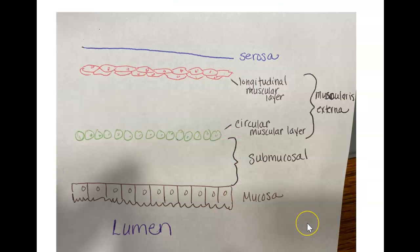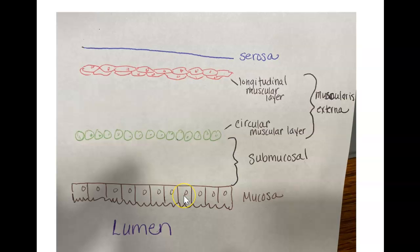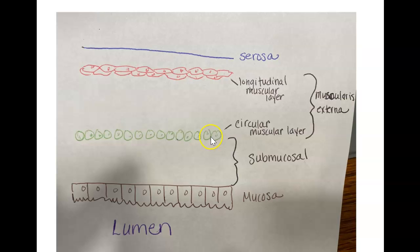To visualize this: the lumen is where food passes through. The mucosa layer lines that lumen. Then you have the submucosal layer. The muscularis externa layer is made up of circular muscle and longitudinal muscle, and then the serosa surrounds everything.